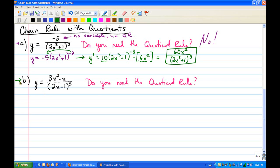For the second one, y equals 3x squared minus x over the quantity 2x minus 1 to the fifth. Again, we ask ourselves, do we need the quotient rule? Well, the answer on this one is definitely yes, yes we do, because both the numerator and the denominator have the variable in it.